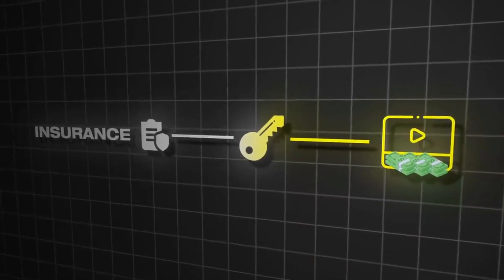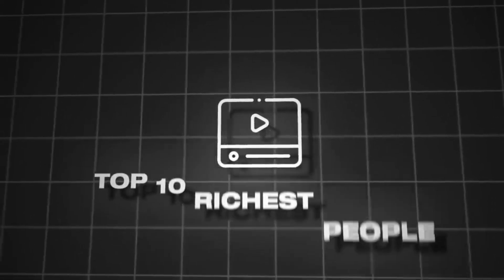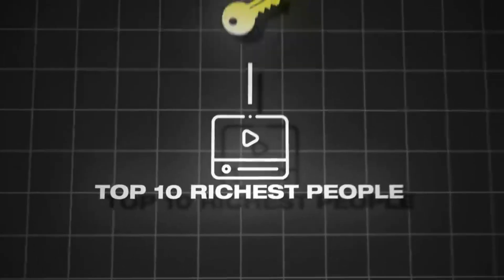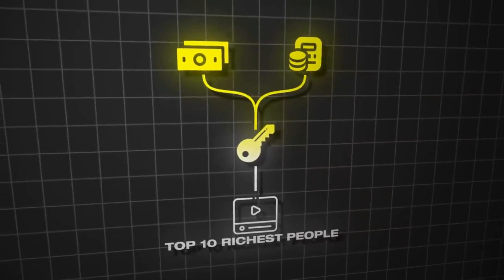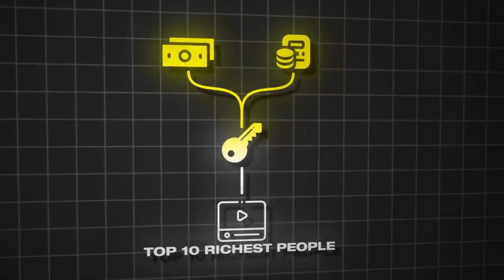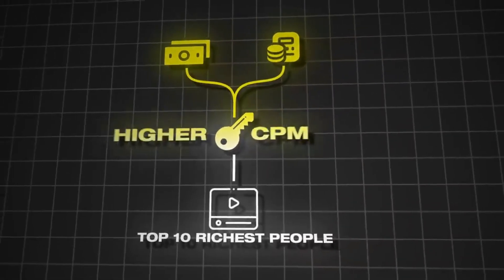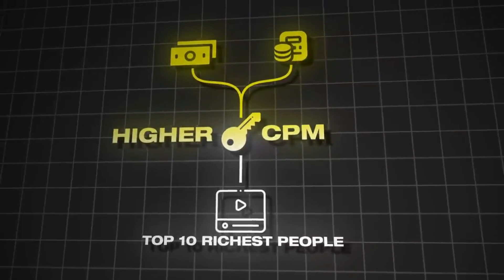You might already have a channel, but you could make a few videos on some of these topics and relate them to your existing content. For example, if you have a top 10 channel, you could make a video about the top 10 richest people and include keywords like money and finance — and actually talk about those subjects within the video. You will on average get a much higher CPM rather than just entertainment top 10 videos.